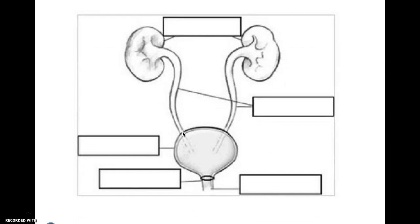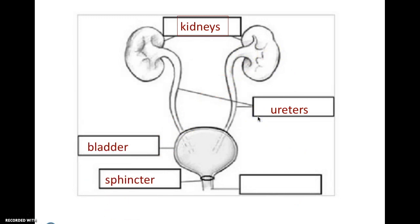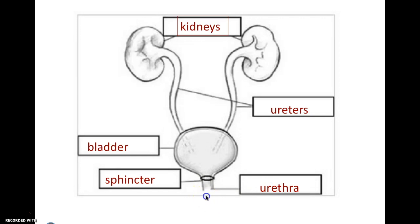This diagram here is a simple diagram for you to label. You have your kidneys, your ureters which lead to the bladder, a sphincter that holds the fluid in, and the urethra which leads it out of the body.